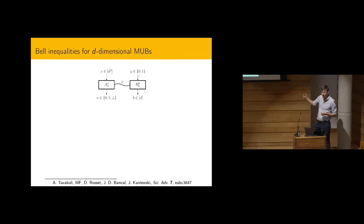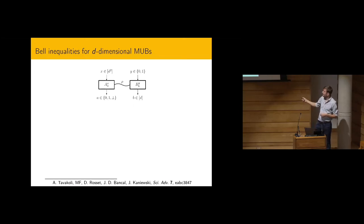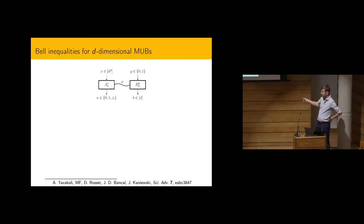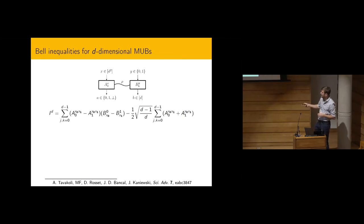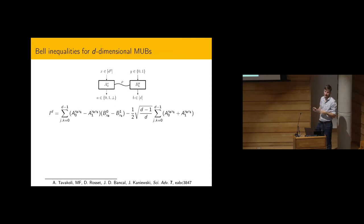Going back to MUBs through Bell inequalities: we define a family of Bell inequalities for any integer d greater than 2 for MUBs of dimension d. On Bob's side, you have two measurements with d outcomes each — these will be your MUBs optimally. On Alice's side, you get d² measurements with three outcomes each. The Bell operator involves the two MUB operators on different bases, taking the difference of projections.